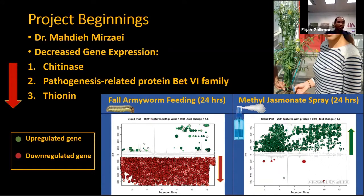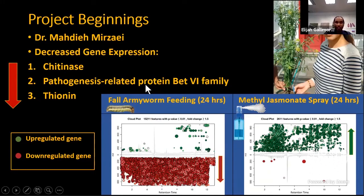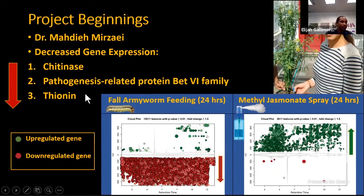My project investigates three of these genes that had down-regulated expression: namely chitinase, pathogenesis-related protein BET6 family, which I'll just call pathogenesis-related protein, and thionin.